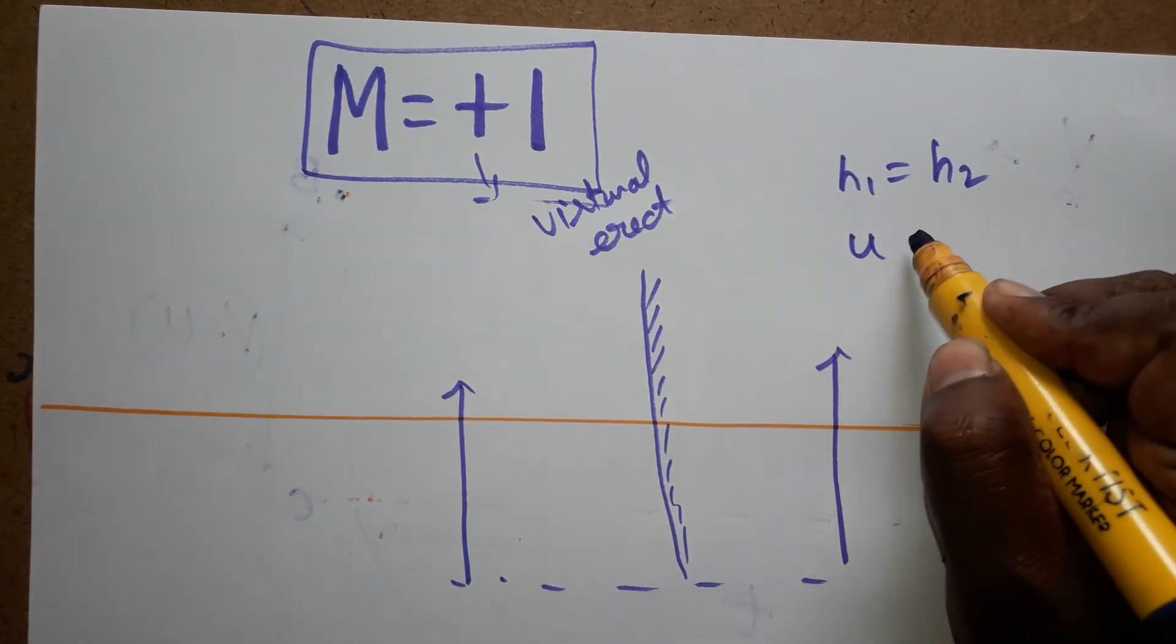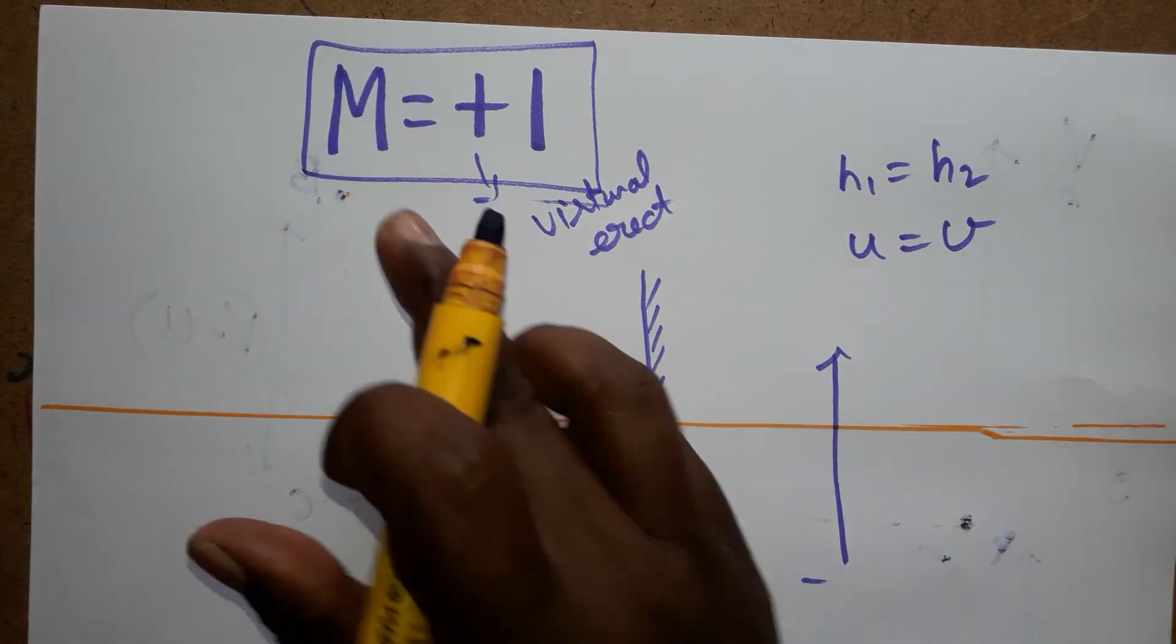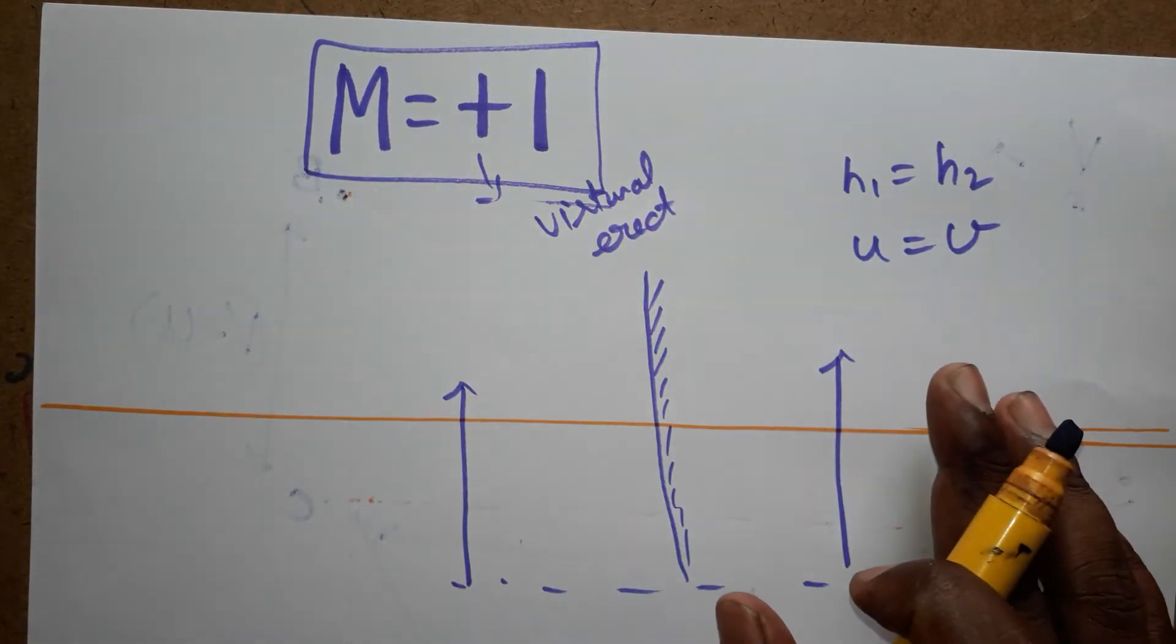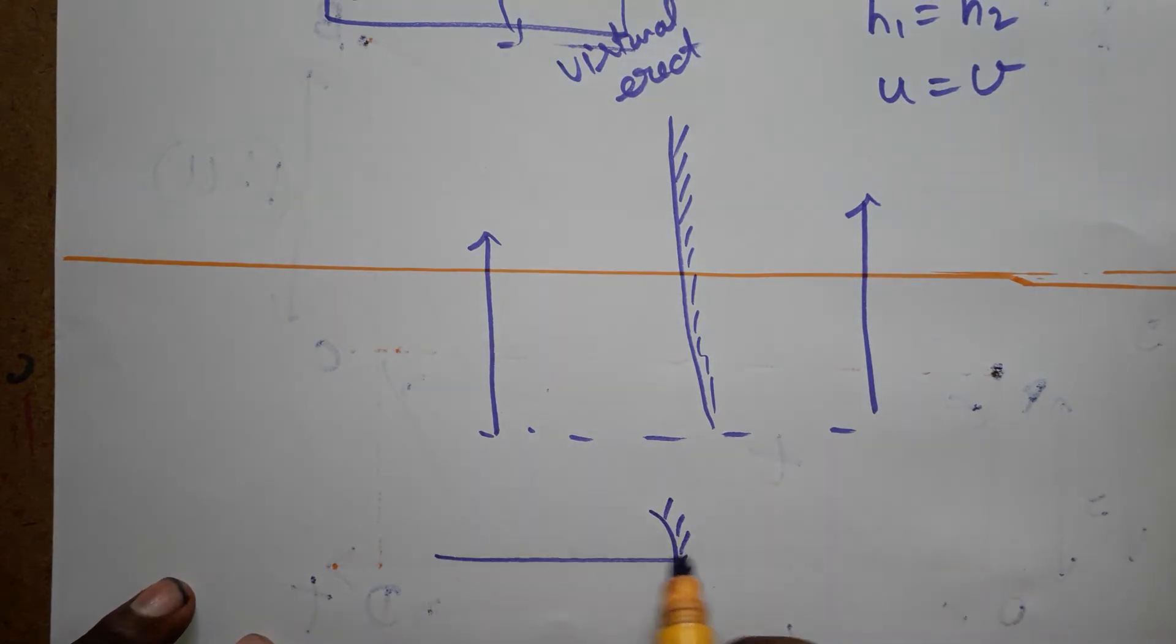Object height and image height will be same. Object distance and image distance will be the same. This is the representation of M is equal to plus one. Why it's not going to happen due to the concave mirror?